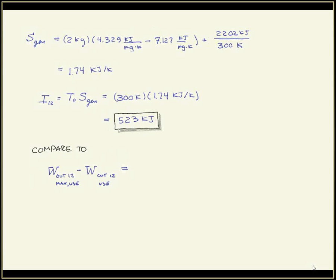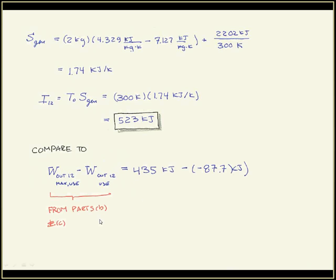You're probably asking: didn't we already calculate that number? Not quite. We calculated the maximum useful work out of the system and then the work we actually got out. If we subtract those two numbers from parts B and C, we get exactly 523 kilojoules. The irreversibility is the difference between the maximum useful work and the actual useful work. And those numbers match — we did everything correctly.